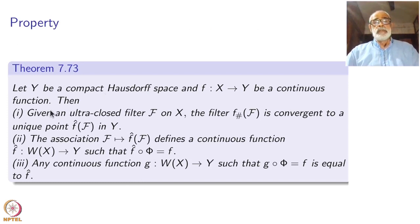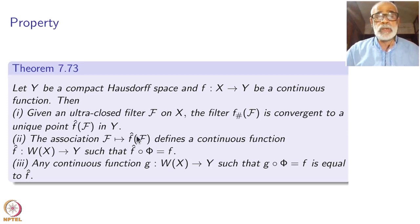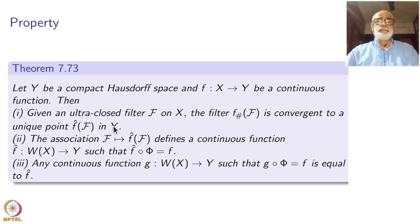Start with a compact Hausdorff space y and a continuous function f from x to y. Then, given an ultra-closed filter F on x, the image filter f-check of F is convergent to a unique point f-hat of F in y. The convergence point is unique, and it depends upon both the filter as well as the function f.